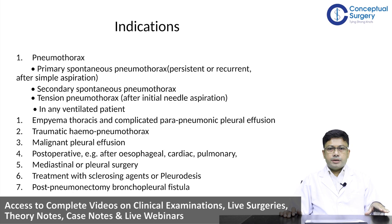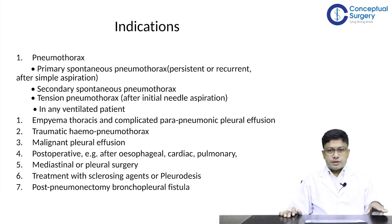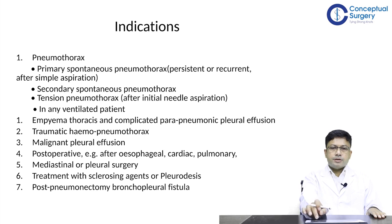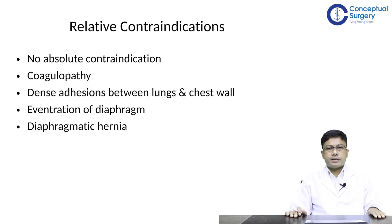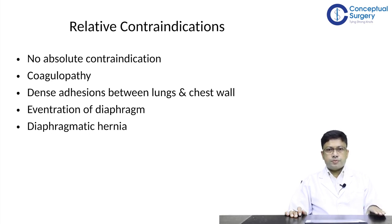In cases of post-pneumonectomy bronchopleural fistula, a chest tube insertion can be done by a competent thoracic surgeon. There are no absolute contraindications for a chest tube insertion — if it needs to be done it has to be done — but one should be careful about certain clinical conditions requiring necessary precautions before carrying out a tube thoracostomy procedure.